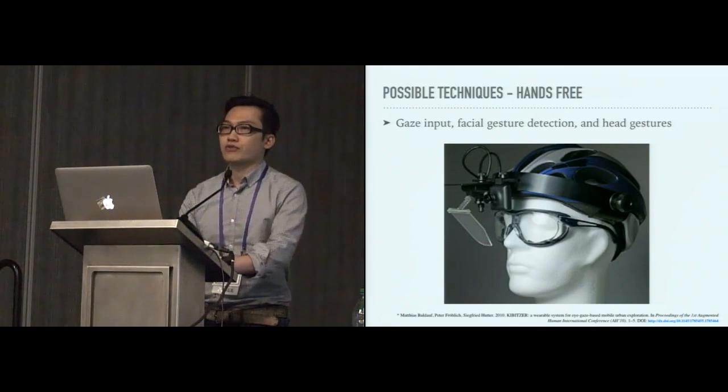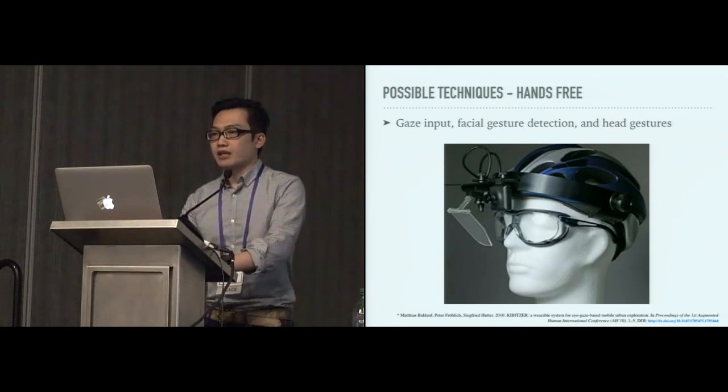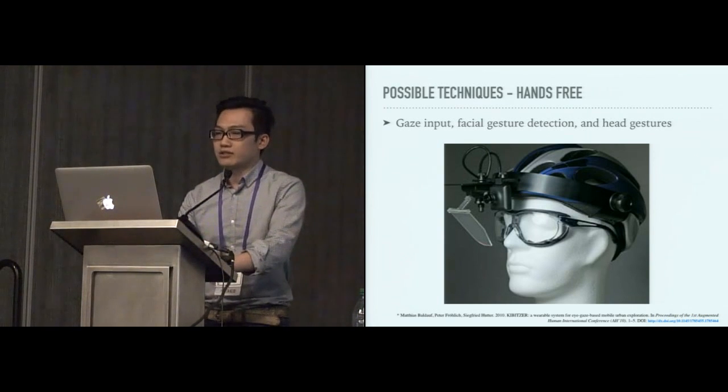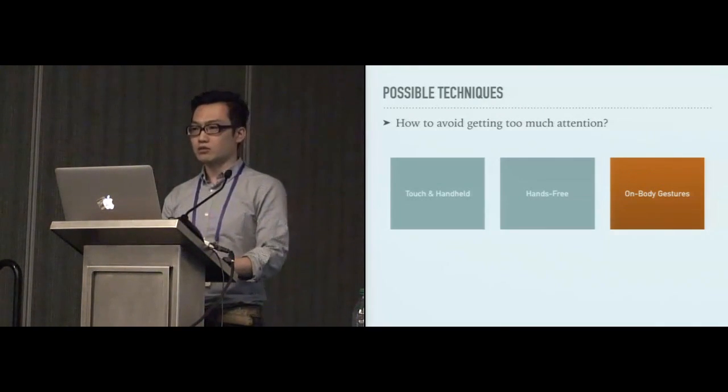Another option is hands-free techniques. For example, gaze input, facial recognition, and also head gestures. Only slight muscle action is involved in this type of interaction, but that requires excessive sensors wearing on the hand, and also requires much calibration, and is prone to tracking errors.